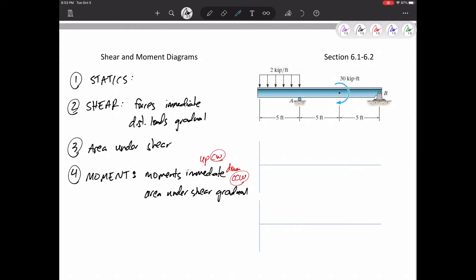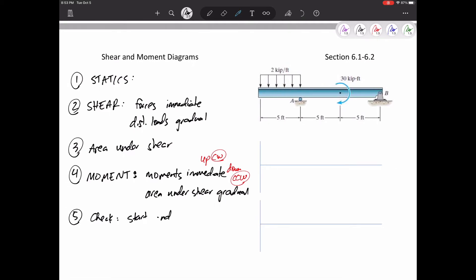And it moves it by the amount under the curve. And remember, V is the slope of M. So generally, it's going to be concave down because downward distributed loads make it concave down. And then just double check. Does it start and end at zero?